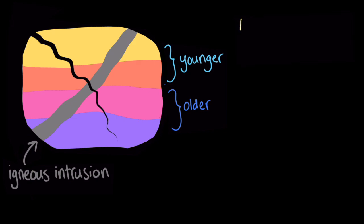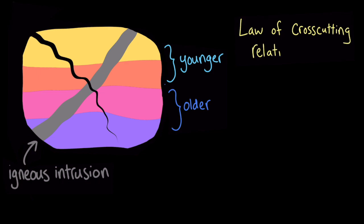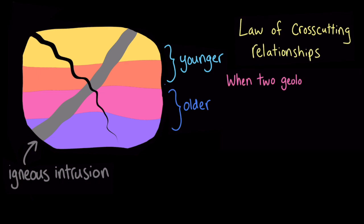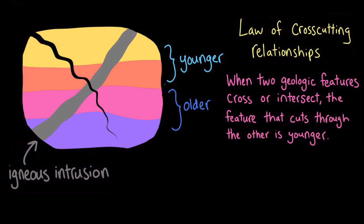This rule says that when two geologic features cross or intersect, the feature that cuts through the other is younger. And this makes sense, because you can't break something before it even exists.